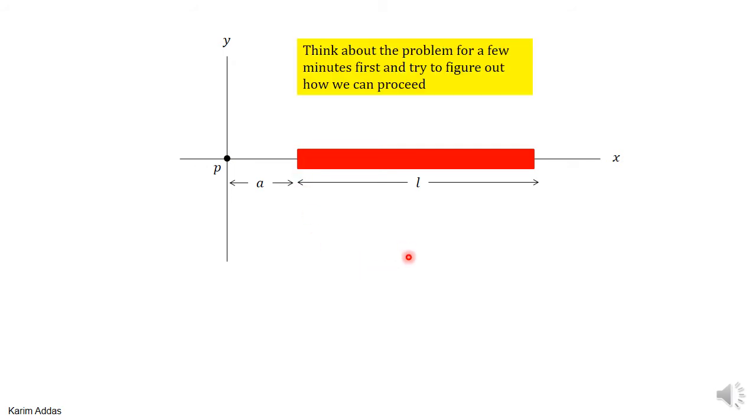Try to think about the problem on your own for a few minutes and figure out how you would solve it. Remember that the thickness of this rod is zero. I just put it with some thickness so you can see it. So it's basically just a line on the x-axis. Try and figure out for a few minutes how to solve it and then continue.